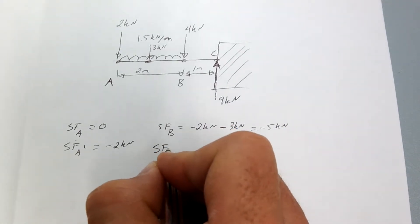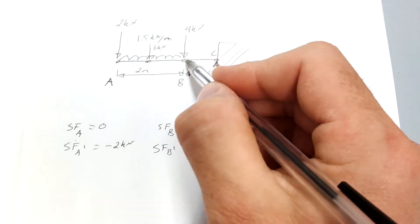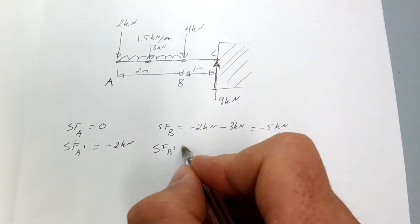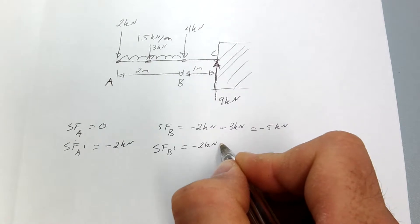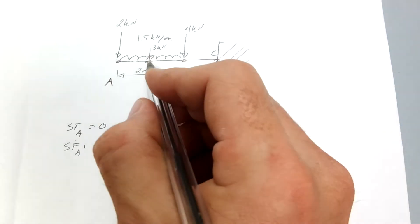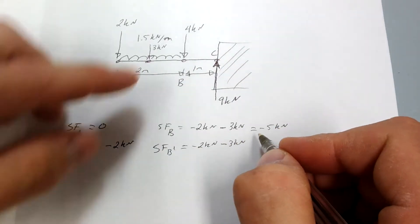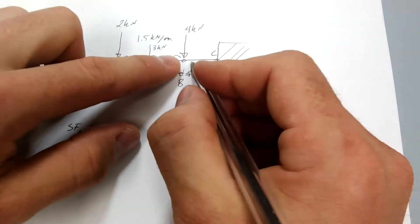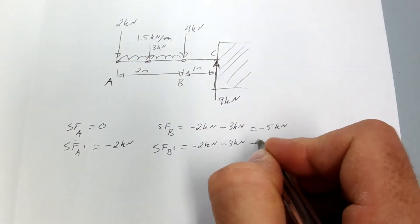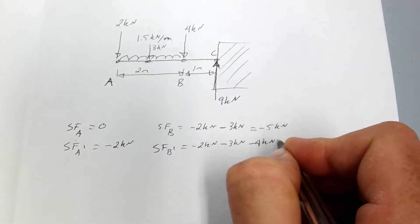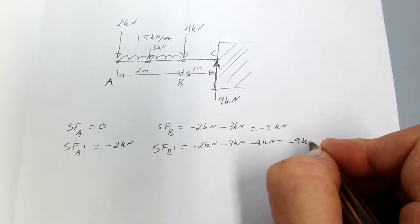Now at point B prime, just to the right of point B, you have negative 2 kilonewtons, plus another negative 3 kilonewtons from the distributed load, and because it's just to the right of point B, you add another negative 4 kilonewtons, giving negative 9 kilonewtons.